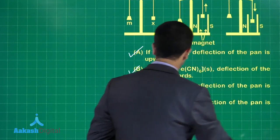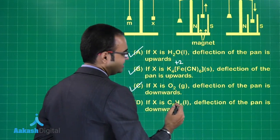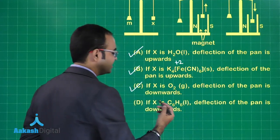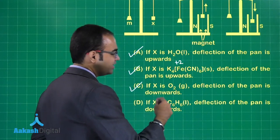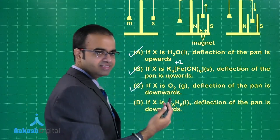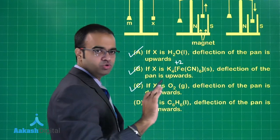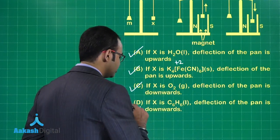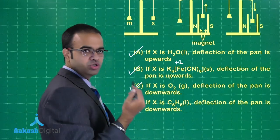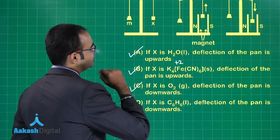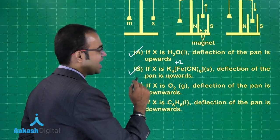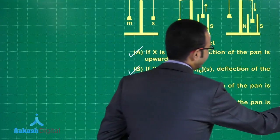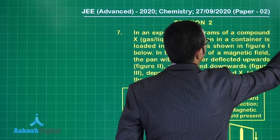The last option: if X is C₆H₆, deflection of the pan is downwards. But C₆H₆ is diamagnetic, not paramagnetic, so this option is wrong. The answer to question seven is A, B, and C.